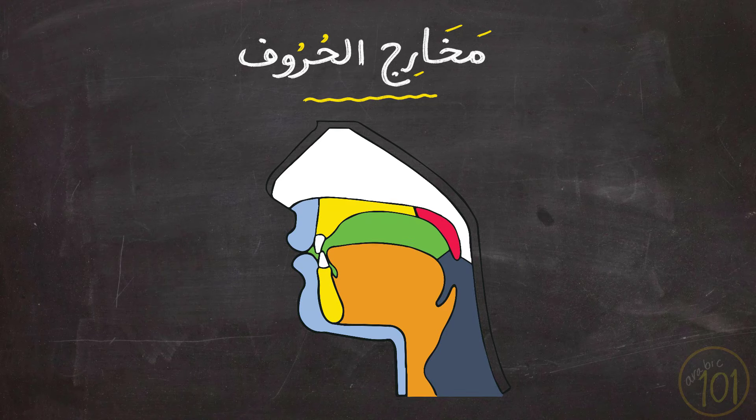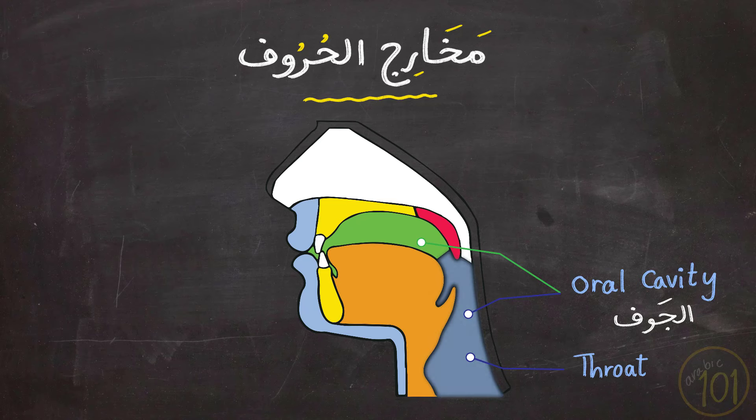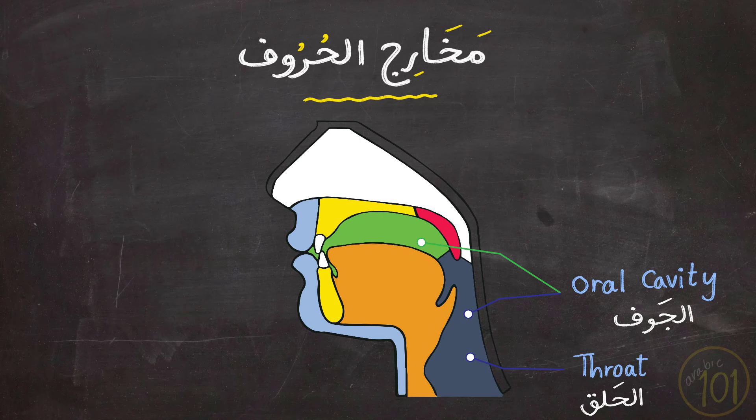They are the oral cavity, which is all this dark blue and green area. All of this is the oral cavity. We call it in Arabic, al-juroof. The second area is the throat, which is this dark blue area, and we call it in Arabic, al-halq. So, al-halq is part of al-juroof, the oral cavity.